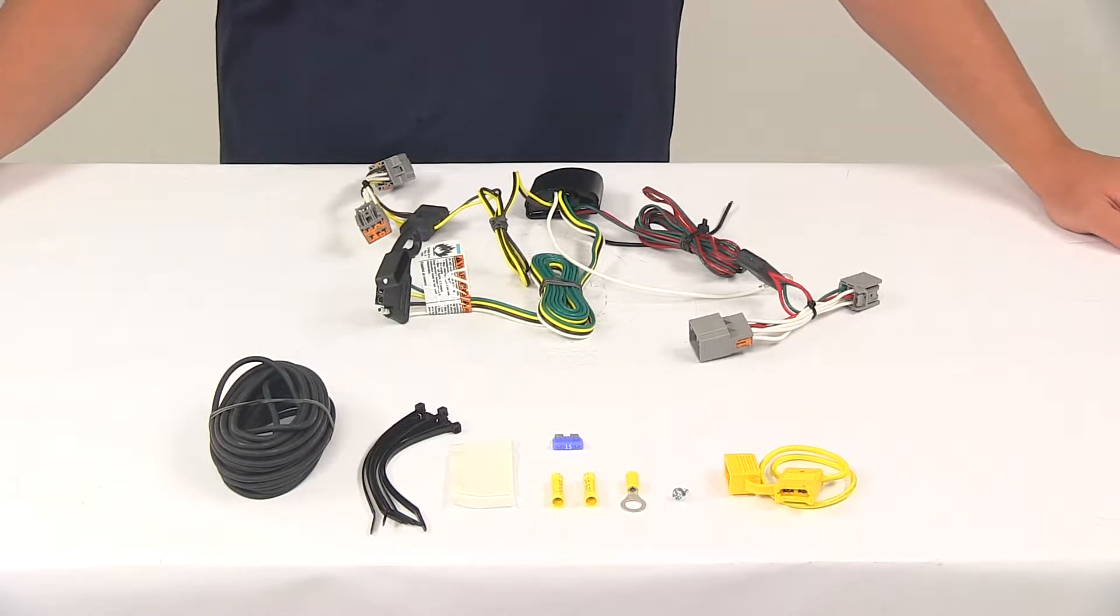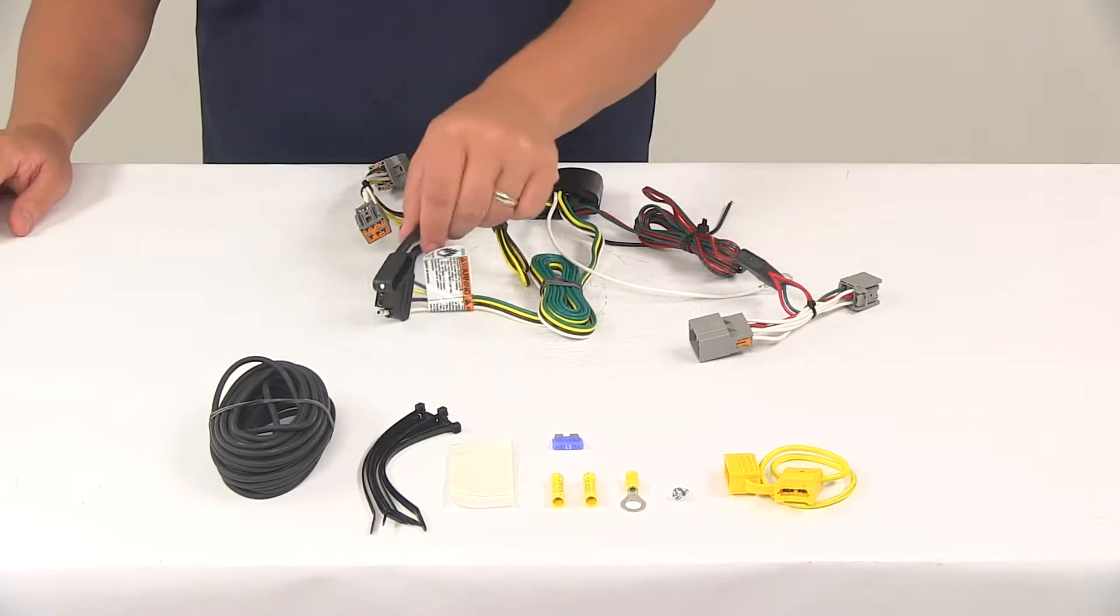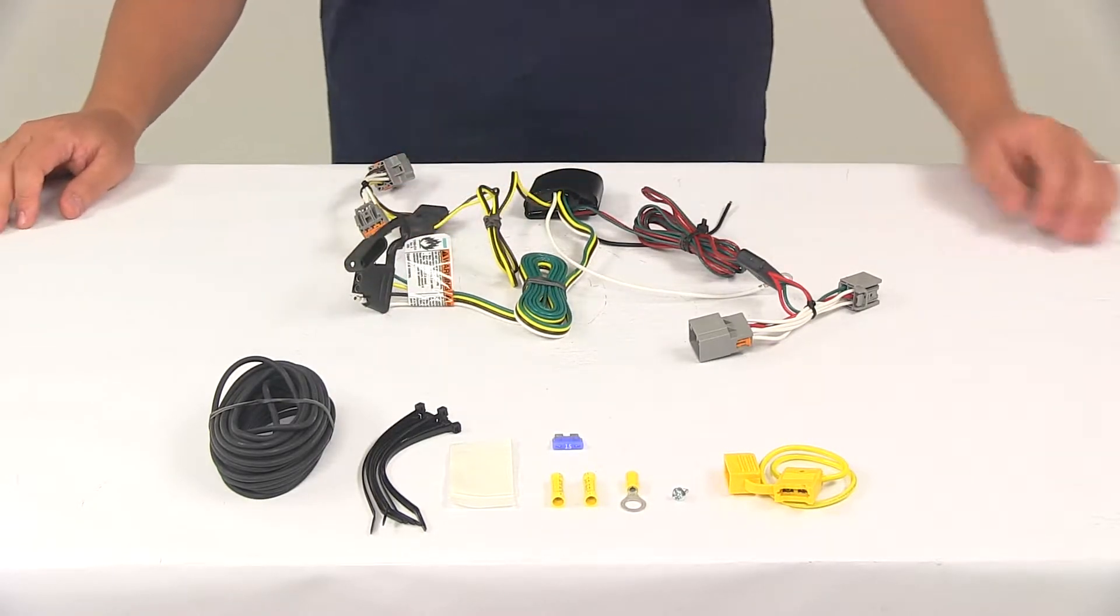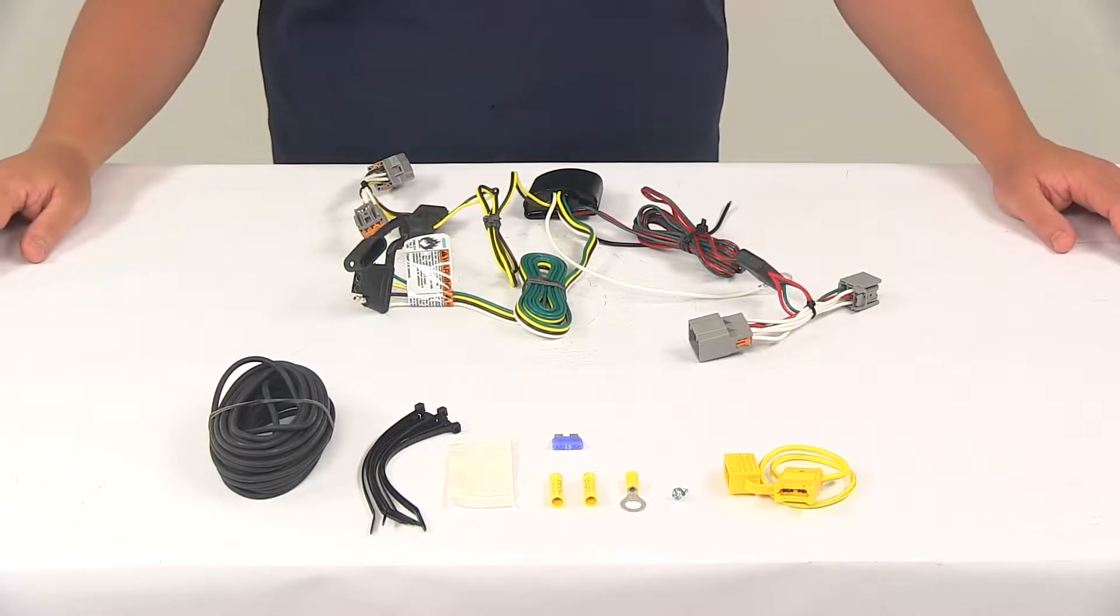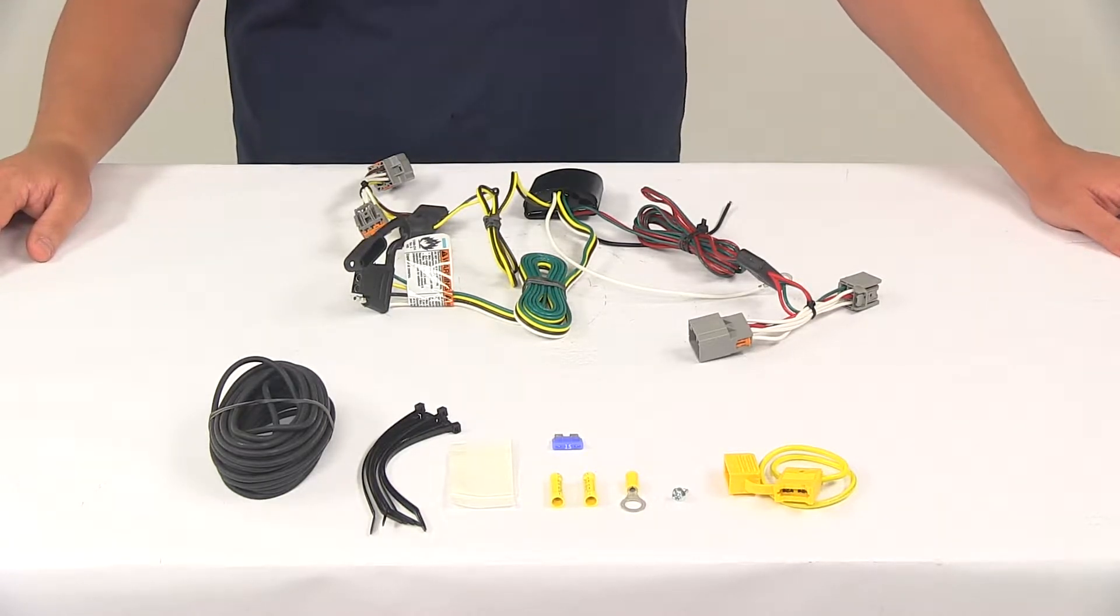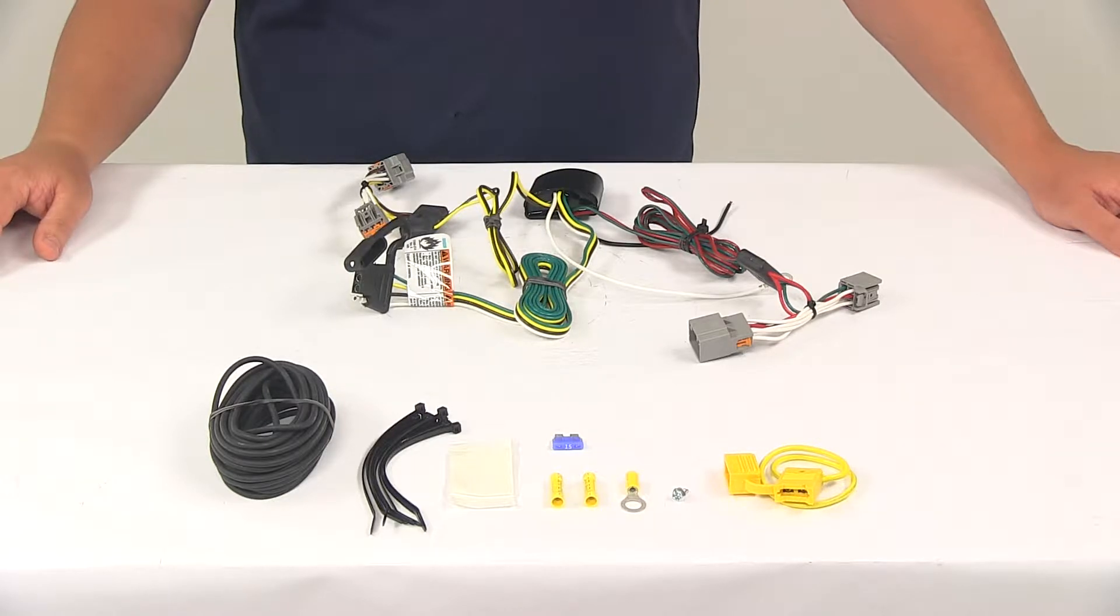Today we're going to be taking a look at the T1 vehicle wiring harness with the four-pole flat trailer connector. This product fits certain years of the Ford Transit Connect. To see if this is a fit for your vehicle, or to double check if it's a fit for your vehicle, you can use the vehicle fit guide located at eTrailer.com.